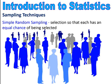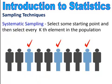Now, some sampling techniques. The first is simple random sampling — you select so that each member has an equal chance of being selected. So in simple random sampling, everybody has a chance of being selected. Systematic sampling is selecting a starting point and then selecting every k-th element in the population — for example, selecting every third person. This is when you have some type of system for collecting your data.